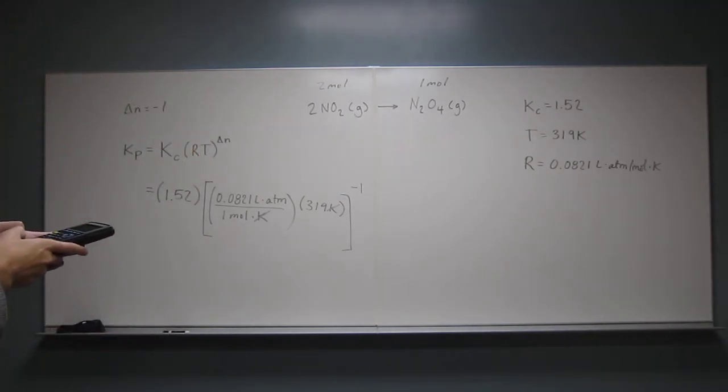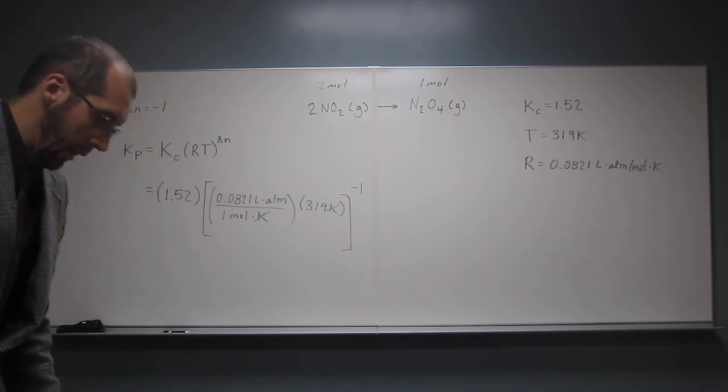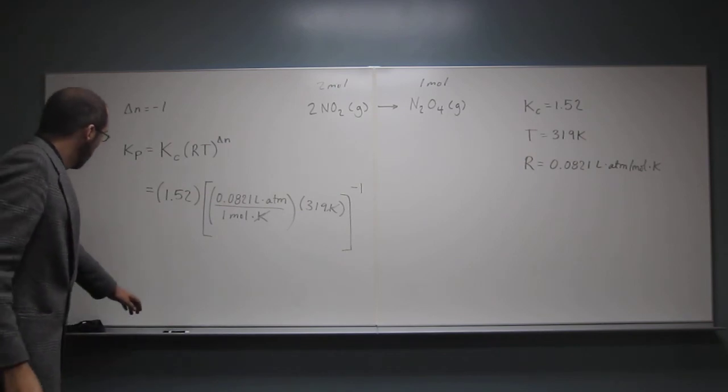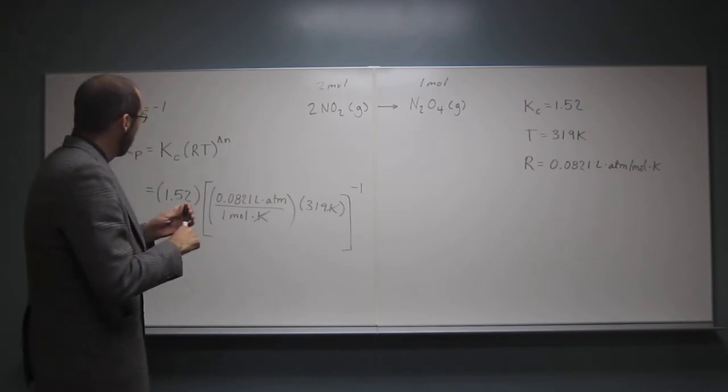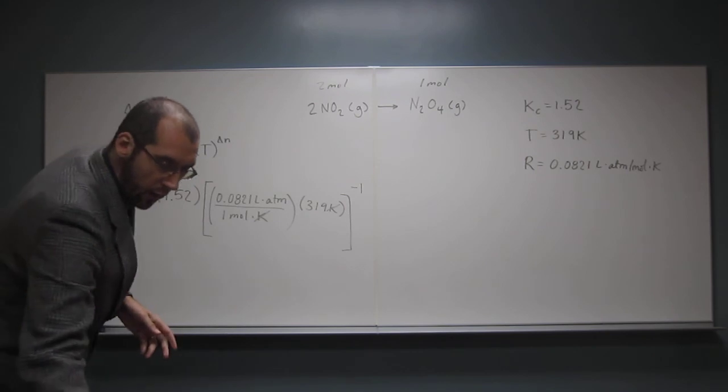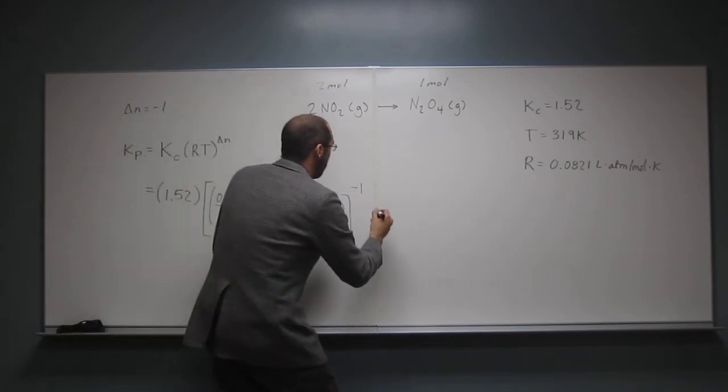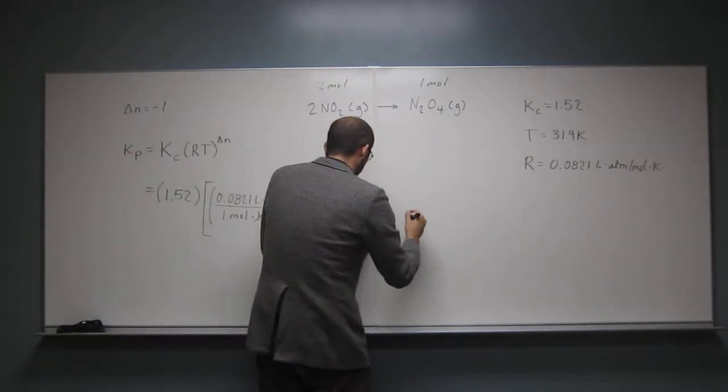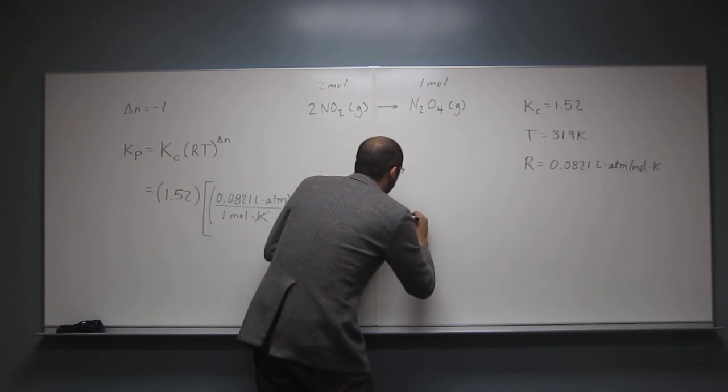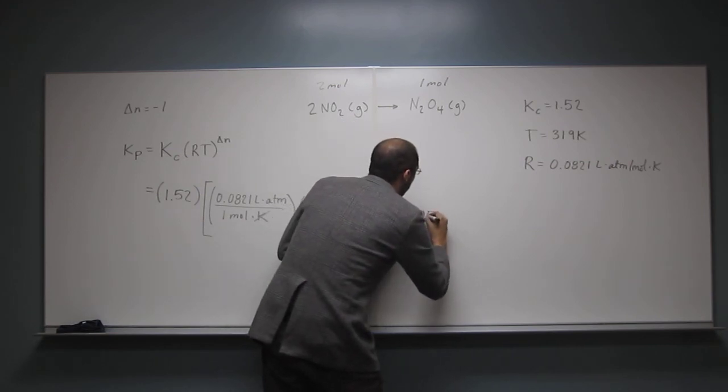So go 0.0821, multiply that by 319, raise that to the negative 1, and then multiply that by 1.52, and you should get an answer that is equal to 0.0580.